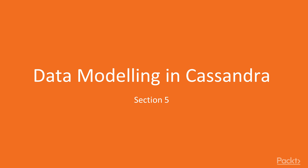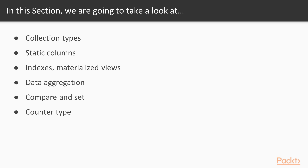Welcome to the fifth section of the Apache Cassandra course. In this section we'll be looking at the data modeling primitives that are available in Cassandra: collection types, static columns, indexes and materialized views, compare and set, and other things that are available in the Cassandra API.